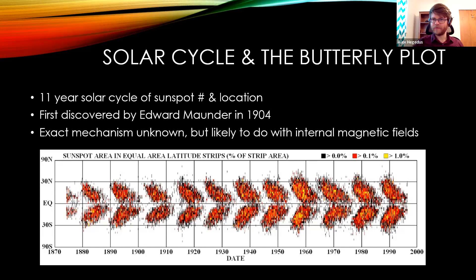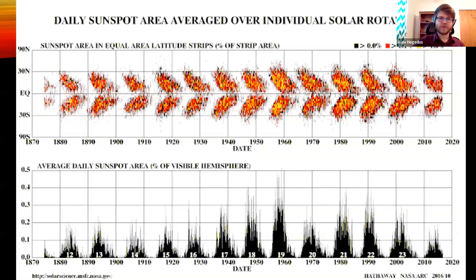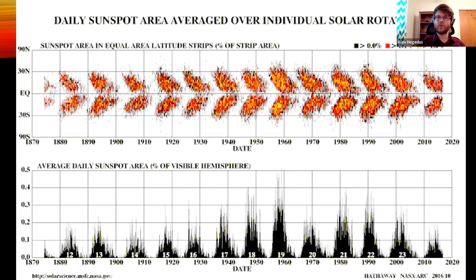Here is that same butterfly diagram now plotted with average daily sunspot area as a percentage of the visible hemisphere. Again, we have these different 11-year solar cycles, and not every solar cycle is the same in intensity — there is some variation between cycles. That is something we're trying to understand and ideally predict: how strong the next solar cycle will be ahead of time. This is an evolving field of study, and as we get more data and measurements, we can try to refine these predictions. As of now, it is definitely not a solved problem.